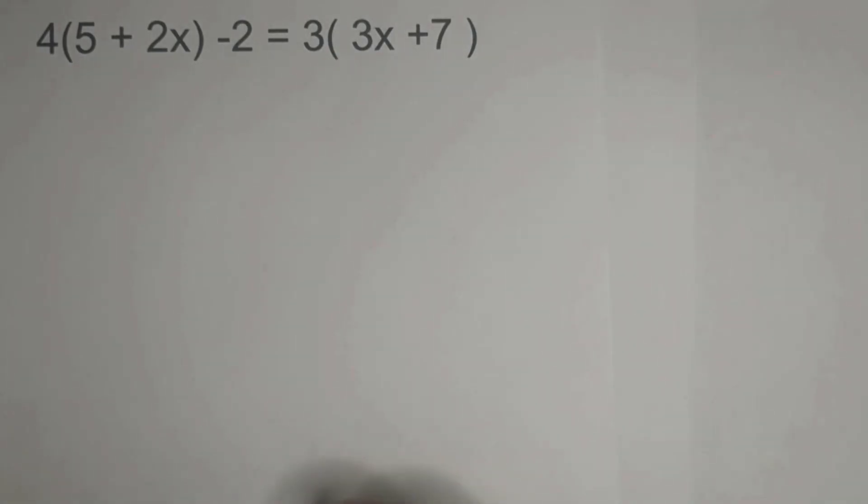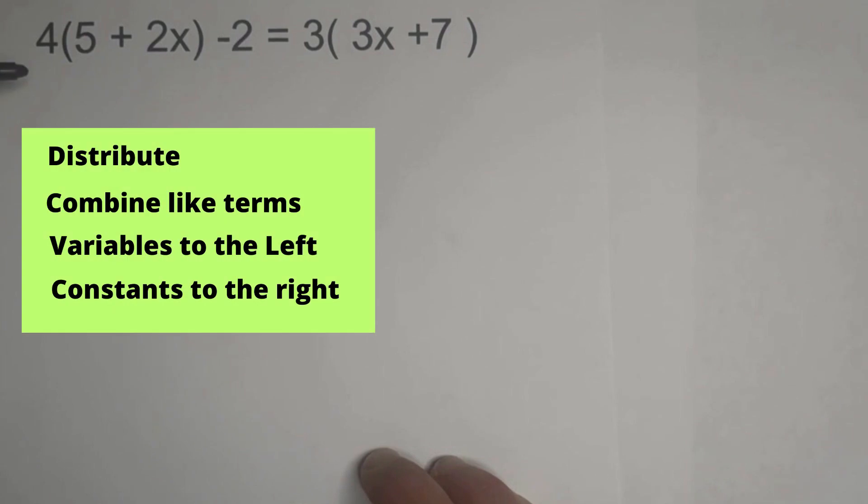Let's get started with this example, and here are the steps. We're going to distribute if we have parentheses, then we're going to combine like terms if we can. Then we're going to move variables to the left and constants like numbers to the right.